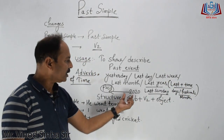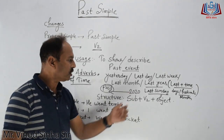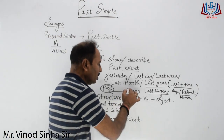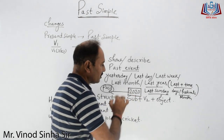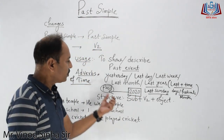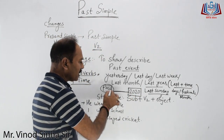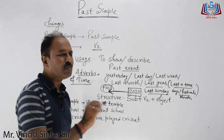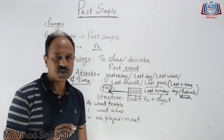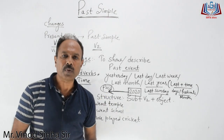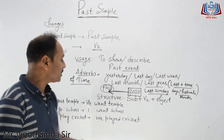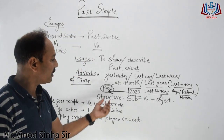Ab doosri cheez — meine yahan 2020 likha hua hai. 2020 is the present year. 2020 se pehle jitne bhi saal guzar gaye — kitne sau bhi saal guzar gaye — woh sab past events hain. Past event ka matlab hai past simple. Ab structure pe aate hain past simple ka.